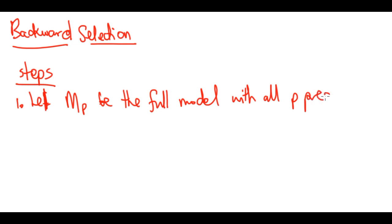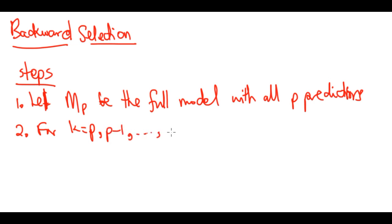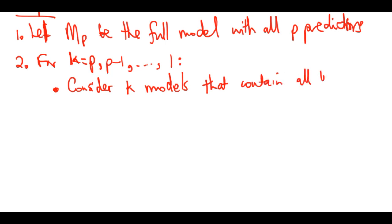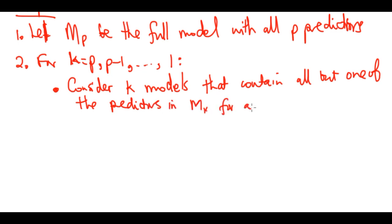The full model has all p predictors. Then for step two, for k equal to p, p minus one, going all the way down to one, the first part is: consider k models that contain all but one of the predictors in M_k, for a total of k minus one predictors.